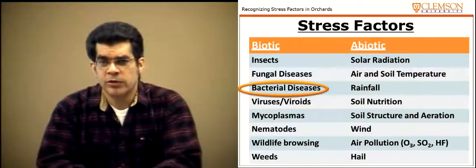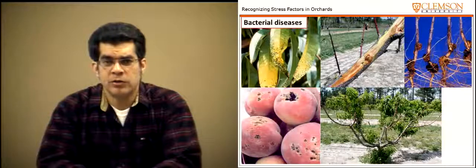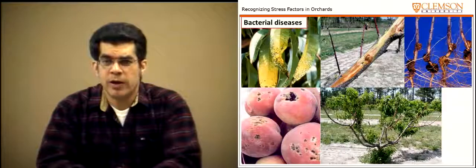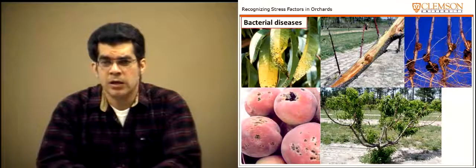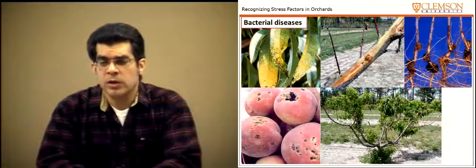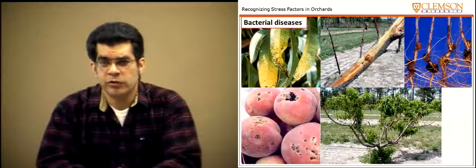In terms of bacterial diseases, bacterial spot causes damage to both leaves and fruit, compromising productivity and tree health. Bacterial canker can cause significant damage to scaffold branches and fruiting wood. Crown gall is a bacterial disease in the soil, and nurserymen who find trees with crown gall in the nursery need to destroy them. These bacterial diseases can be a problem and cause stress to the tree.